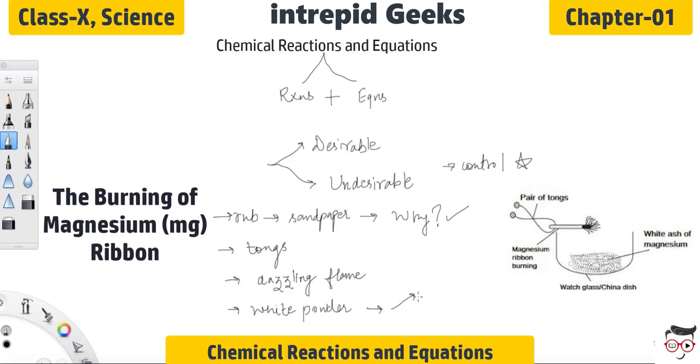Now from class 9th you know how to write magnesium oxide chemically. So the chemical symbol for magnesium element is Mg. For oxygen it is O. Magnesium has a valency of plus 2. Oxygen has a valency of minus 2. When we will cross multiply the valencies of the elements we will get the final product as MgO. So this is the chemical formula of magnesium oxide. Let me show you a small video of burning of magnesium ribbon so that you can understand it more clearly.